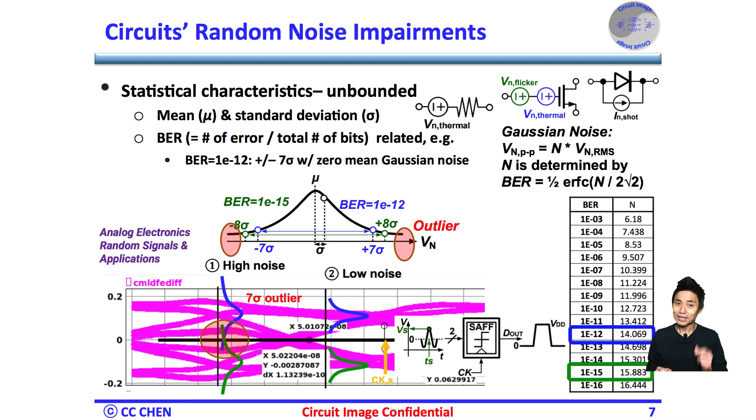Again, the bit error rate is the total error divided by the total number of samples. So, the low bit error rate requires a greater number of samples or longer waiting time. For example, for BER equals 1e-12, the plus minus 7 sigma peak noise amplitude should be taken with a mean Gaussian noise in a link budget estimation.